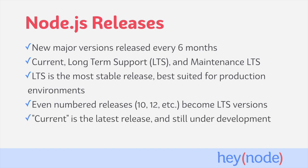The latest version of Node.js available at any time is typically called the Current version. The Current version will have new features added to it as they become available. Because the current release is being actively worked on, it may get experimental features that might change over time, and it's not considered to be particularly stable.